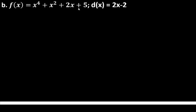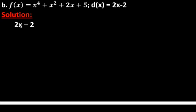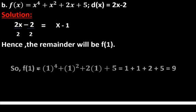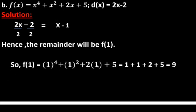For the second example, f(x) = x⁴ + x² + 2x + 5 is divided by 2x - 2. This is not in the form x - c, so we divide through by 2 to get x - 1, meaning c = 1. Now we find f(1): f(1) = 1⁴ + 1² + 2(1) + 5 = 1 + 1 + 2 + 5 = 9. Therefore the remainder when dividing f(x) by 2x - 2 is 9.